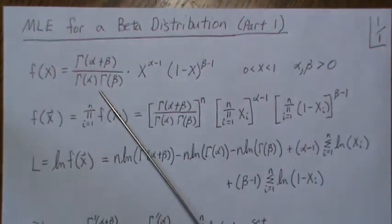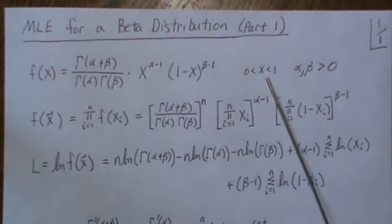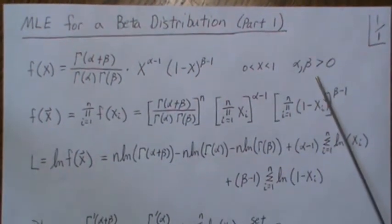So here we have a beta distribution, of course X is between zero and one, the alpha and beta are greater than zero.